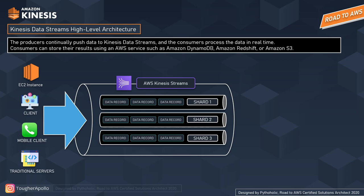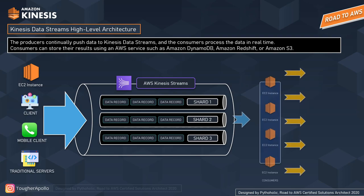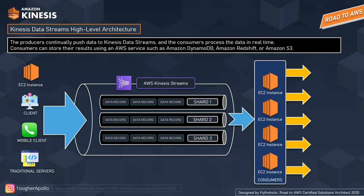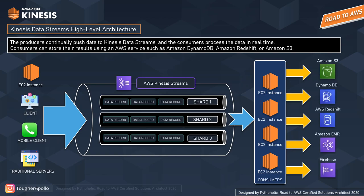When you make a PutRecord API call, it returns the shard ID of where the data record was placed and the sequence number assigned to the data record. Consumers — Kinesis Data Streams applications — process the data, and upon processing, data can be stored in useful services like Amazon S3, AWS Redshift, DynamoDB, Amazon EMR, or Amazon Kinesis Data Firehose. This is basically the high-level architecture of Kinesis Data Streams.